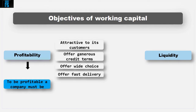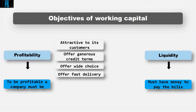High inventory levels suggest that a business can offer a wide choice and/or fast delivery. Liquidity refers to the amount of cash and cash equivalents that a company can rely on when meeting financial obligations, i.e. paying the bills. Unfortunately, these two objectives conflict. For example, to promote profitability, a company may use all of its cash resources to acquire inventory. However, having done so, they then have no way of settling debts.